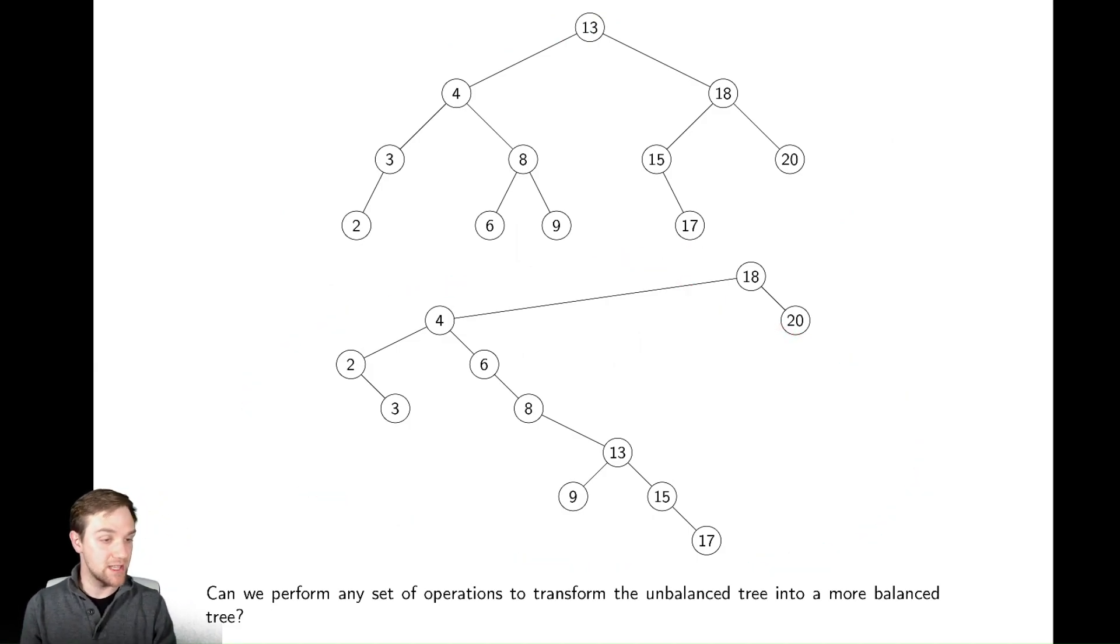They actually have the exact same numbers in them, but this top tree has a height of three, and this bottom tree has a height of six, so double the height. Really not ideal for our circumstances.